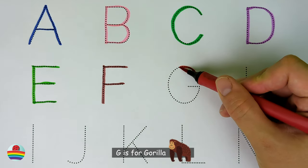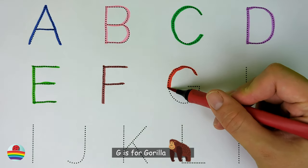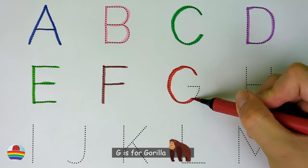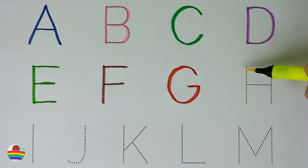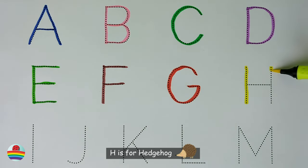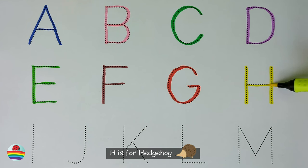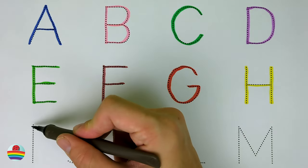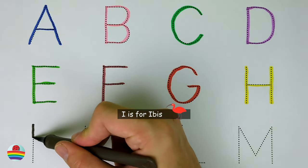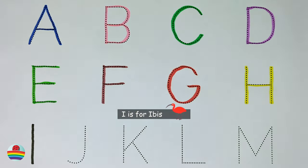G. G is for gorilla. H. H is for hedgehog. I. I is for ibis.